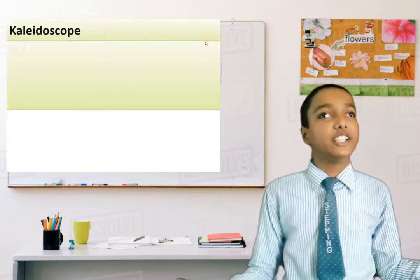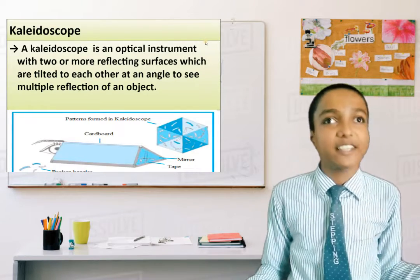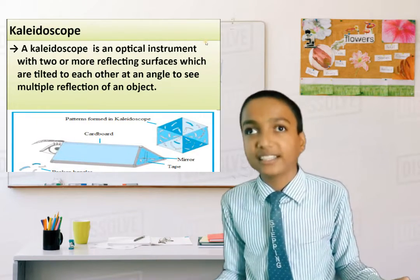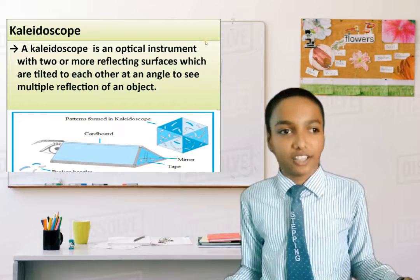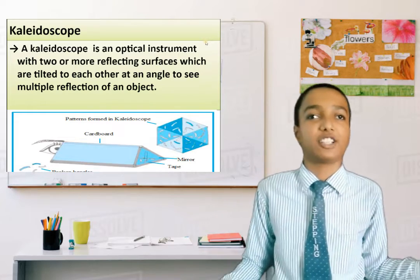Second, kaleidoscope. A kaleidoscope is an optical instrument with two or more reflecting surfaces tilted to each other at an angle to see multiple reflections of an object.